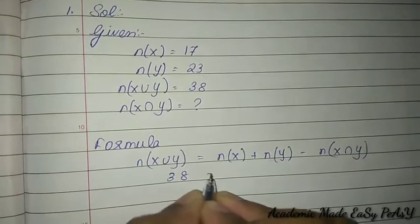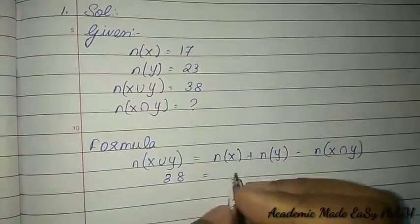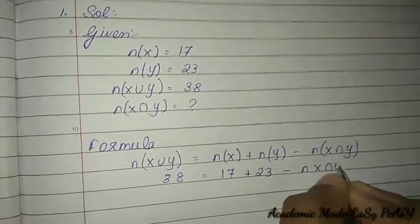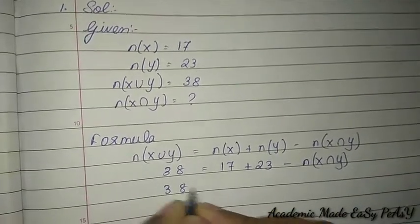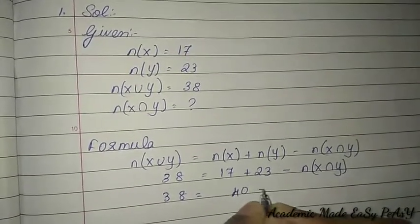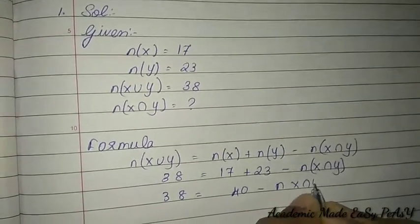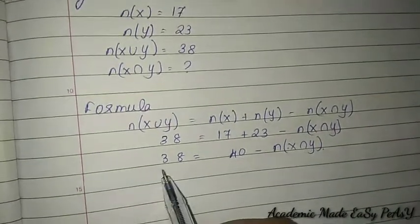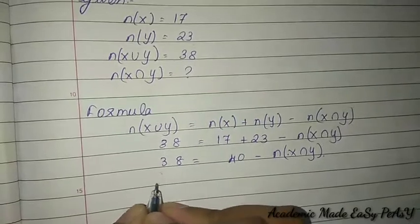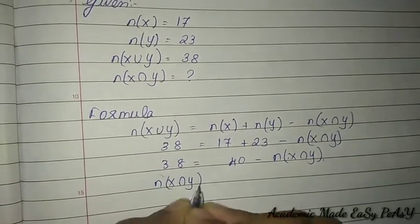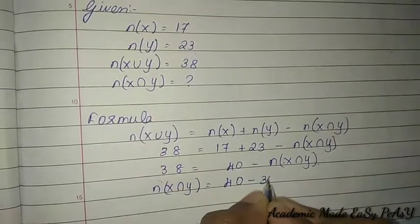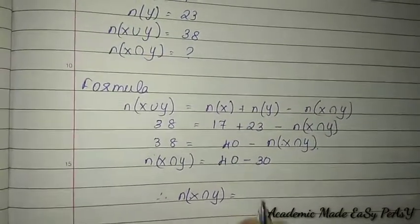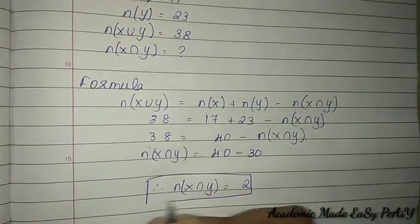Substituting the values: 38 = 17 + 23 − n(X∩Y), so 38 = 40 − n(X∩Y). Taking n(X∩Y) to the left-hand side: n(X∩Y) = 40 − 38, therefore n(X∩Y) = 2. We have found the answer.